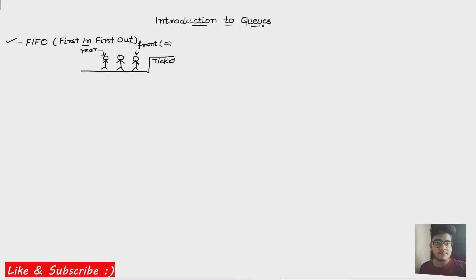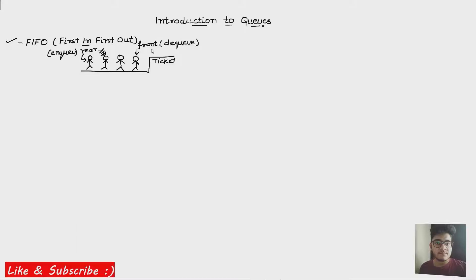In the case of a queue, we call it a dequeue operation, not a deletion operation. Dequeue takes place at the front of the queue. Now if another person wants to join the queue to buy a ticket, they are not allowed to join from the front or in between, because that would be cheating. They have to go to the back of the queue, and the rear pointer is updated to that last person. So insertion, which is the enqueue operation, is performed at the rear end, and the dequeue operation is performed at the front end.